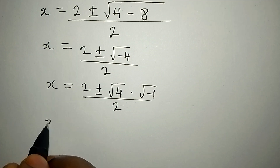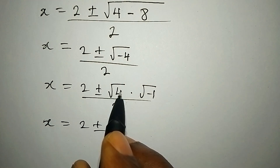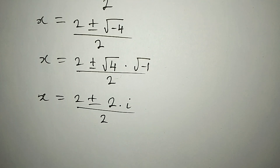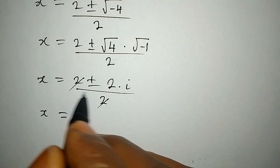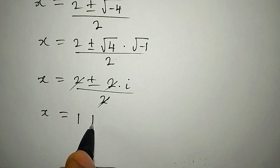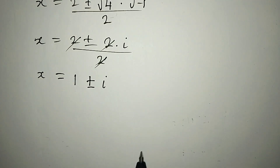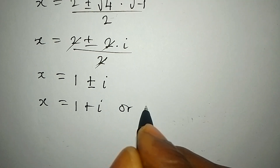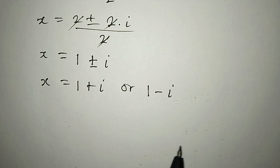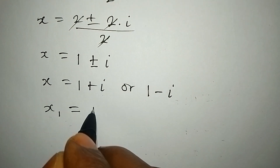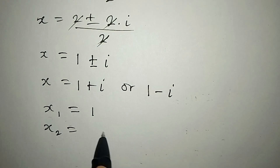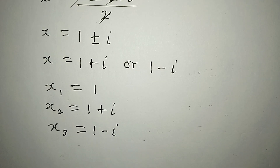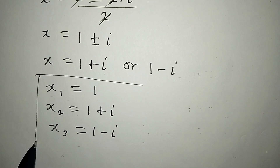Since √4 equals 2 and √(−1) is the imaginary unit i, we have x equals (2 ± 2i) / 2, which simplifies to x equals 1 ± i. Bringing all three solutions together: x₁ equals 1, x₂ equals 1 plus i, and x₃ equals 1 minus i. Thank you for watching.